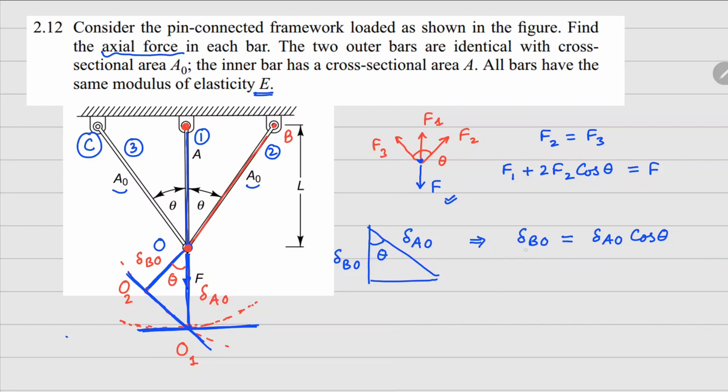Now once we have this relationship, we can apply Hooke's law. For member BO, member BO will have a force that is F2. So F2 times length of member BO divided by elastic modulus E and the cross section area for BO, which is given as A0, this will be equal to member AO, which has force F1 and length L times cos theta divided by elastic modulus E and the cross section area for this, which is A.